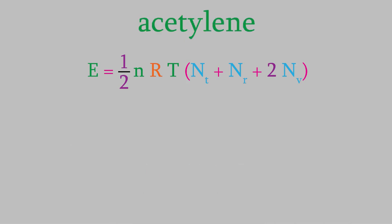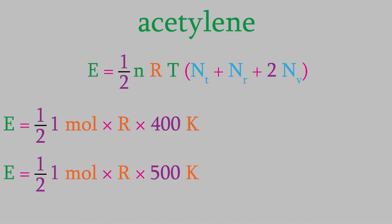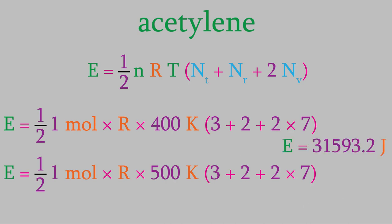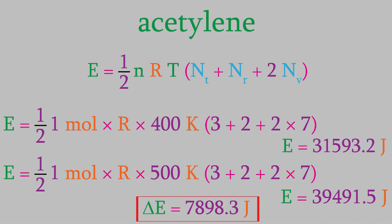Now let's try it for acetylene. Again, one mole, R = 8.314 J/(K·mol), from 400 K to 500 K. Acetylene is a linear molecule made up of 4 atoms, so there are 3 translational, 2 rotational, and 7 vibrational degrees of freedom. That gives us 31,593.2 J at 400 K and 39,491.5 J at 500 K — a difference of 7,898.3 J for acetylene.